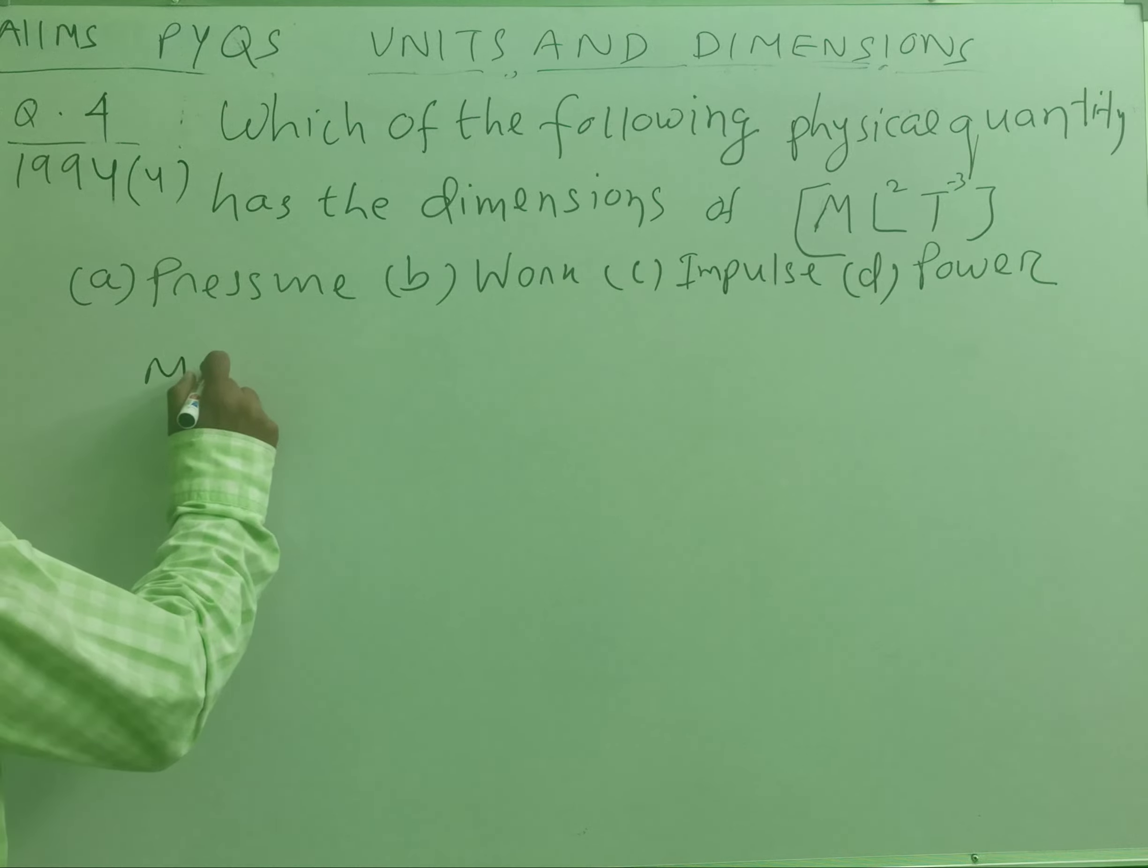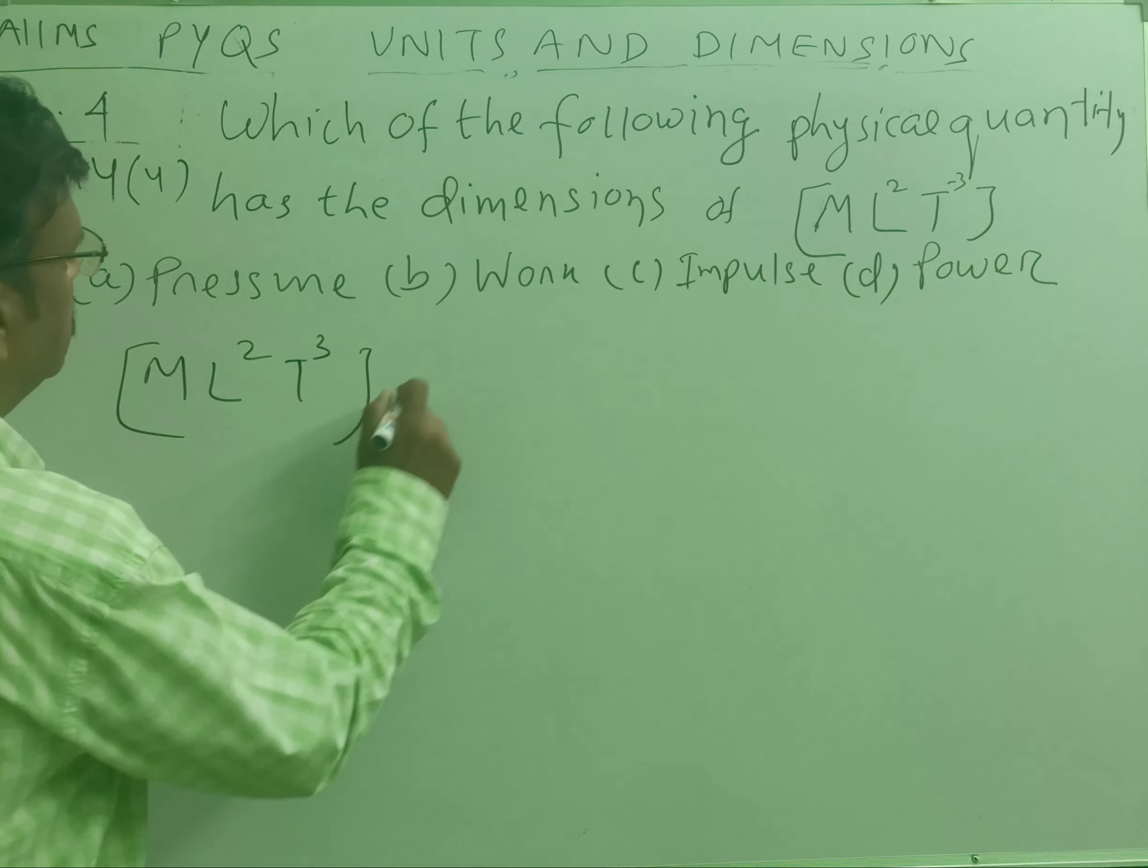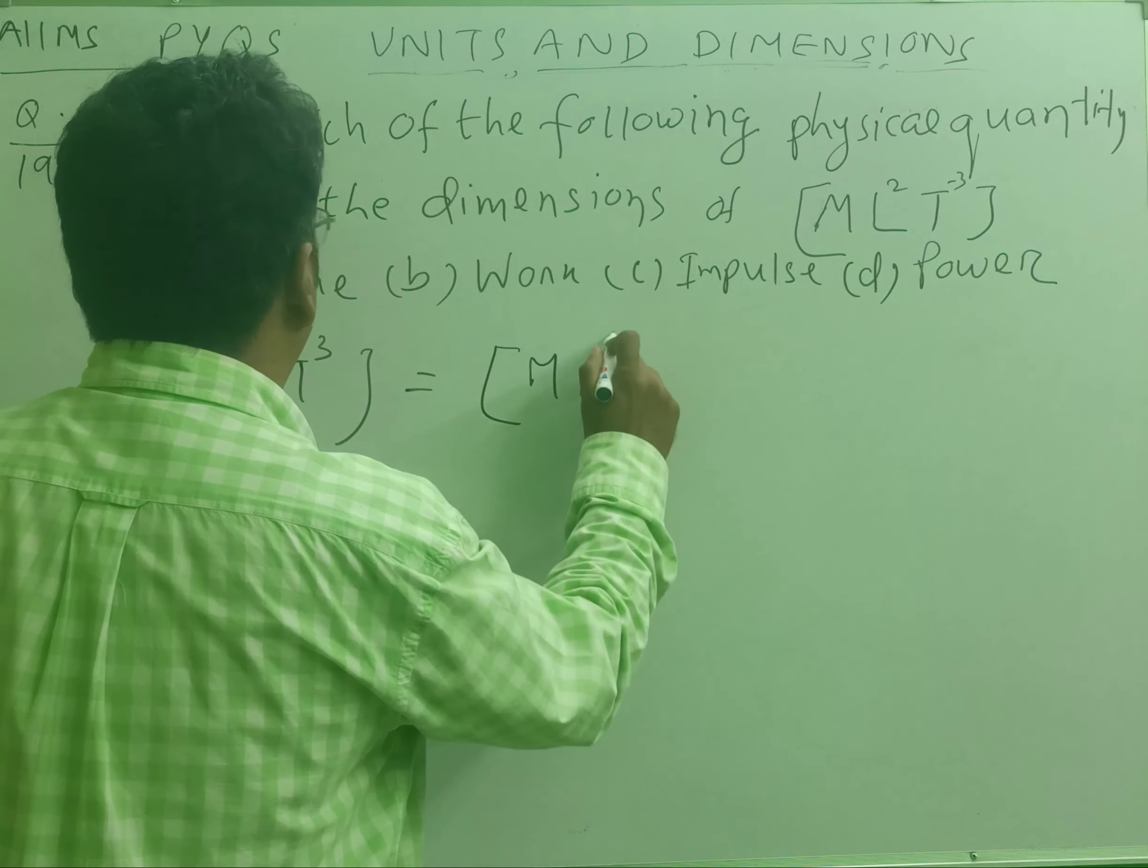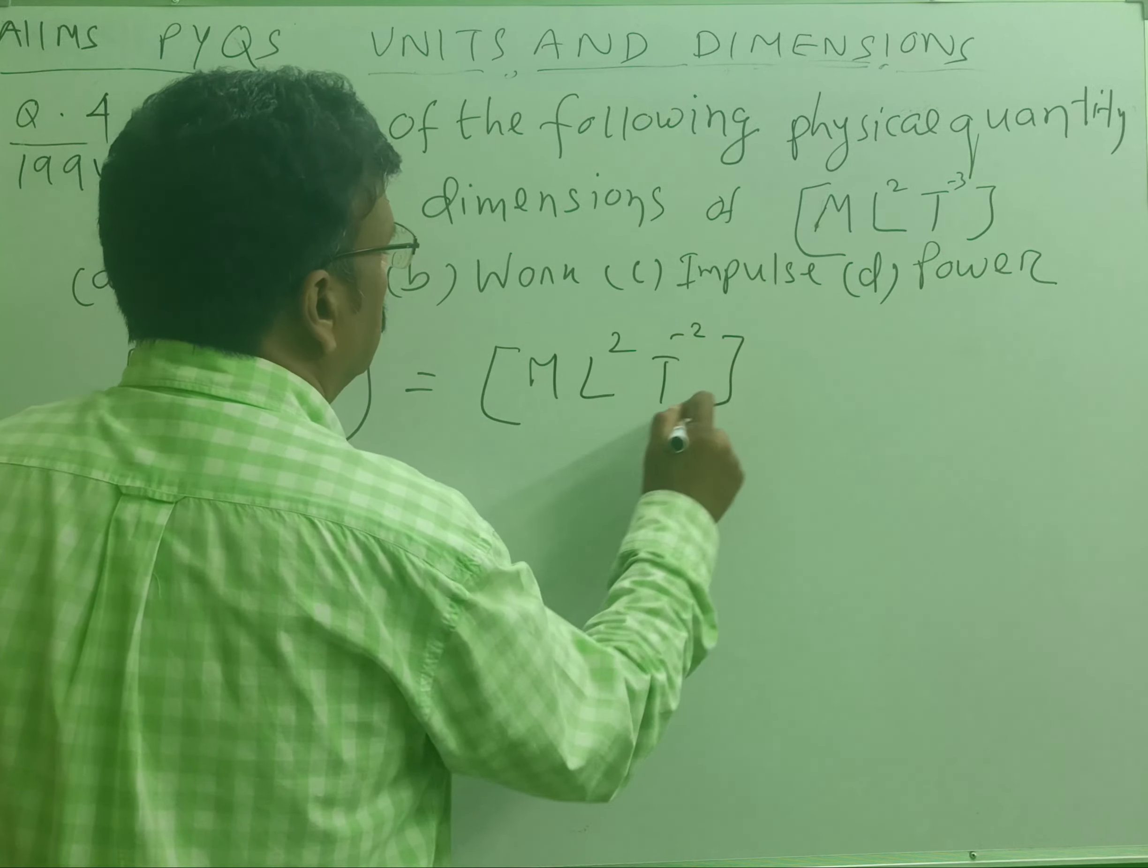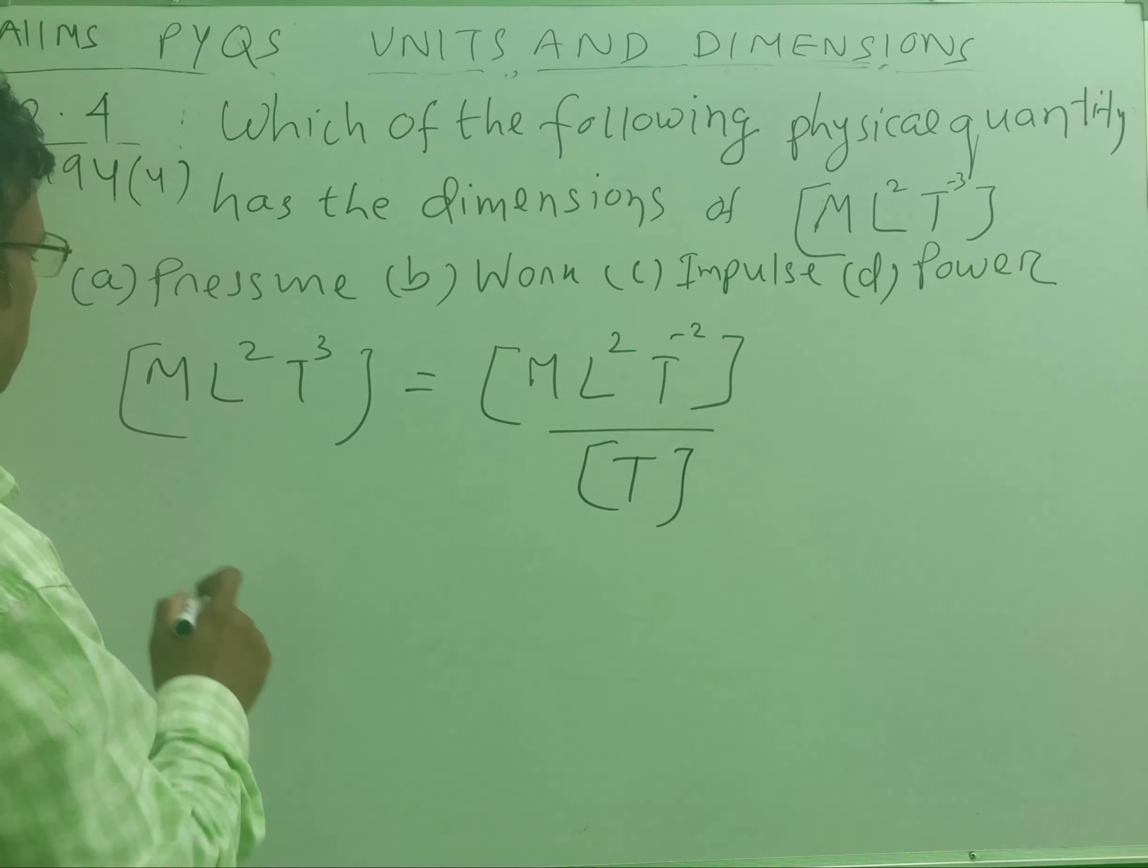It is given ML² T⁻³. It is clearly visible that this physical quantity is equal to ML² T⁻² divided by T. And what is students, ML² T⁻²?